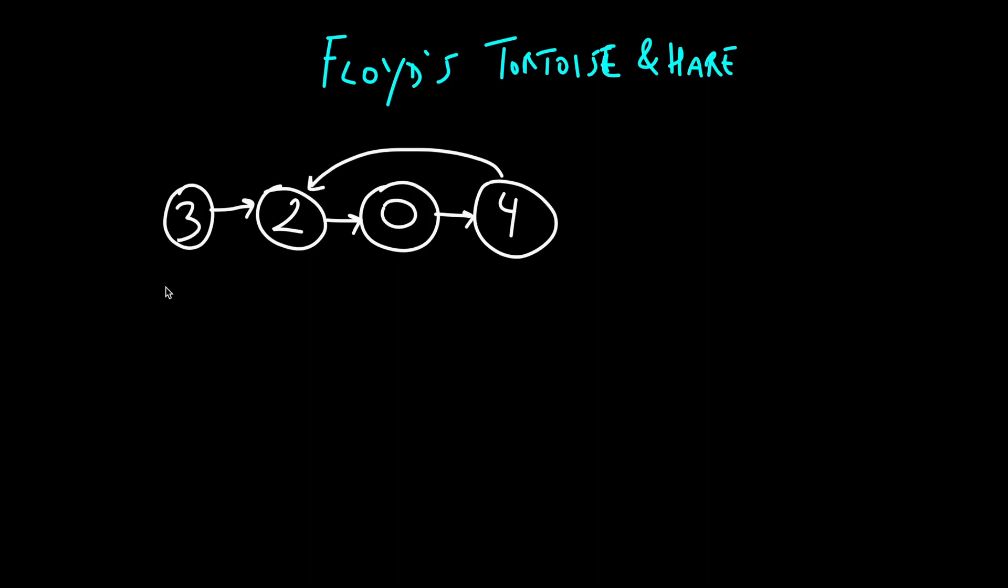Both of our pointers are going to start at our head. So slow is going to be here and fast is going to be here as well. At each iteration, we're going to move slow by one position and fast by two positions. Let's say slow is here. Fast is going to go here.